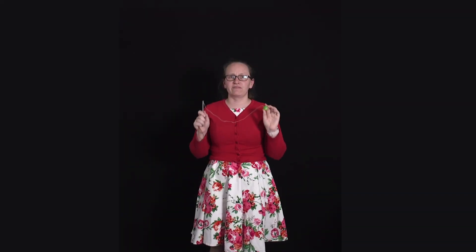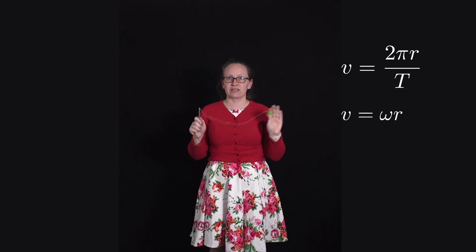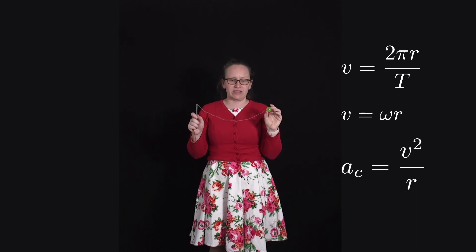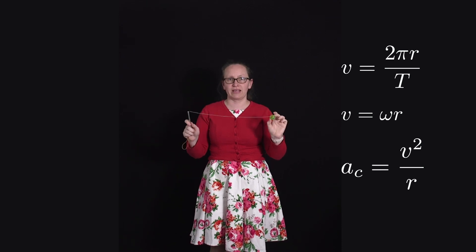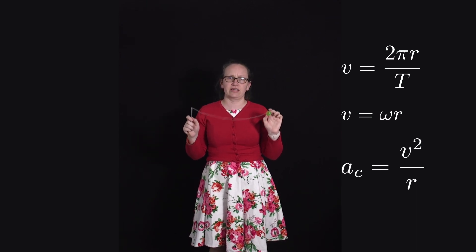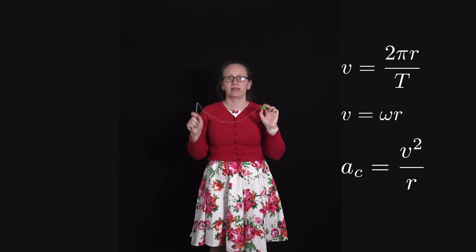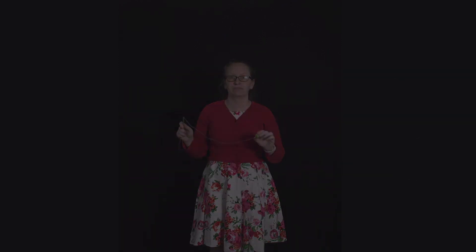So to summarize: v equals 2πr/T, v equals omega·r, and the centripetal acceleration a equals v²/r. Now I want you to make a prediction. In a moment I'm going to start this ball rotating with a certain radius. Think about what would happen if I decreased the radius to half the initial radius — what would happen to the period and to the speed of the ball?